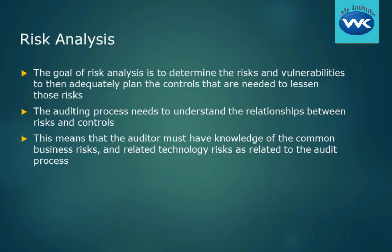In the auditing process, we need to understand the relationships between risks and controls, because that's really what the purpose of the controls are — to somehow reduce the amount of risk that we have to manage or worry about. As an auditor, we have to know what the common business risks and related technology risks are as they relate to the audit process.